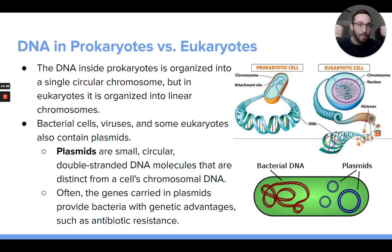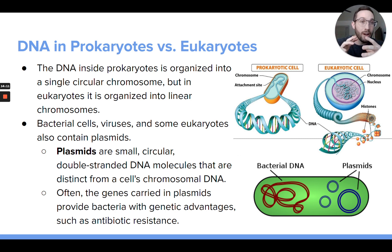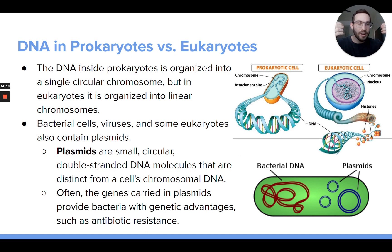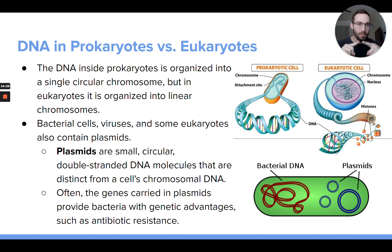In eukaryotic cells, there are usually multiple chromosomes, not just one. Humans have 46 chromosomes — 46 different pieces of DNA — and each chromosome is one long piece of DNA with hundreds of genes on it. But those chromosomes are linear, meaning they have two ends and are not looped. So eukaryotic chromosomes are linear, whereas in prokaryotic cells the chromosomes are circular.